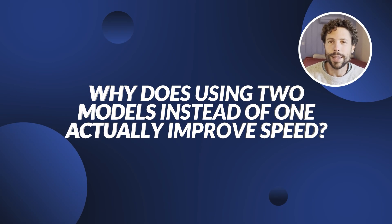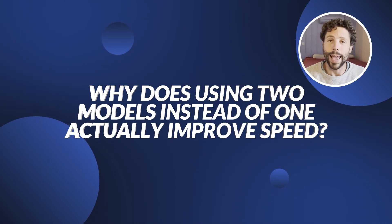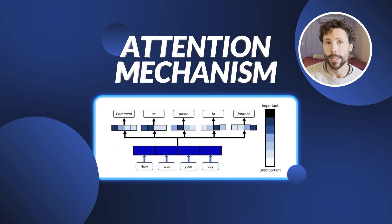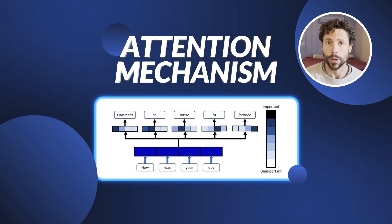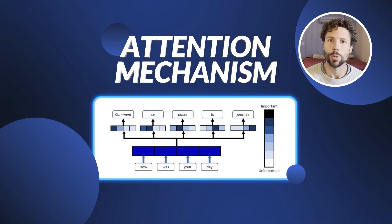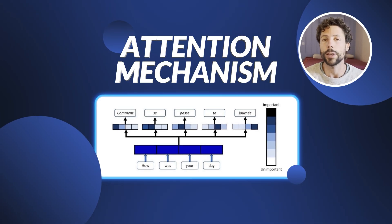And now the question is, why does using two models instead of one actually improve speed? The key is in the verification step, and relies on a crucial feature of transformer models. The attention mechanism computes and caches the attention weights for all tokens simultaneously by using matrix operations on the entire sequence, enabling the model to process each token position concurrently within a single pass. This is what allows us to get all the next-token distributions at once in the verification step, from the large model.